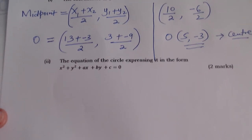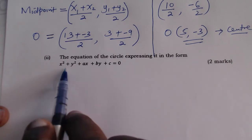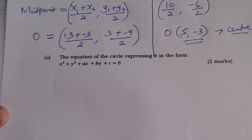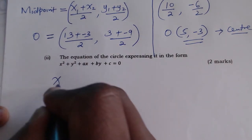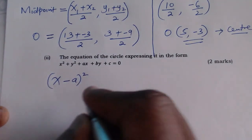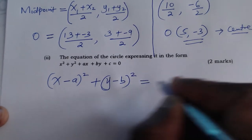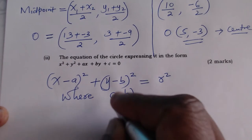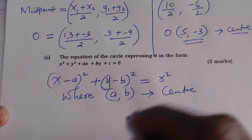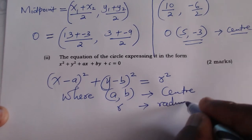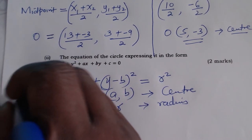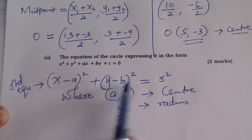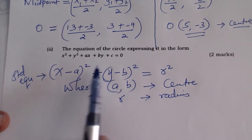We go to part b — the equation of the circle in the given form. Before we do anything, we need to know the standard equation of a circle. The standard equation is: (x − a)² + (y − b)² = r², where (a, b) is the center of the circle and r is the radius.